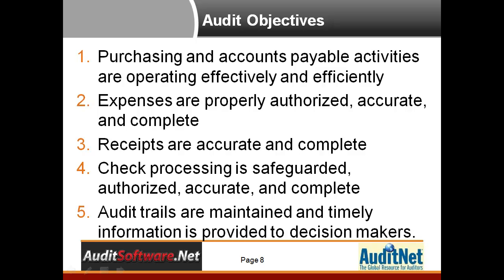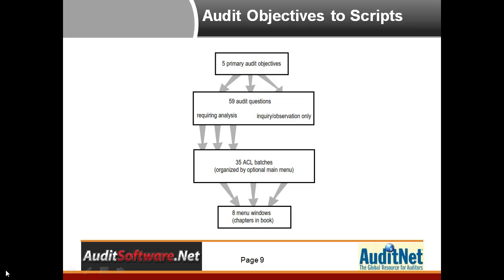We also included check processing — safeguarded, accurate, complete — things around check sequencing and gaps. And we threw in audit trails are maintained, because we do find that the actual audit trail is often not good enough to give you the information you'd desire. So we took the five audit objectives, which are really the goals of accounts payable processing, and came up with 59 audit questions, which then boiled down to 35 batches to help answer those questions.